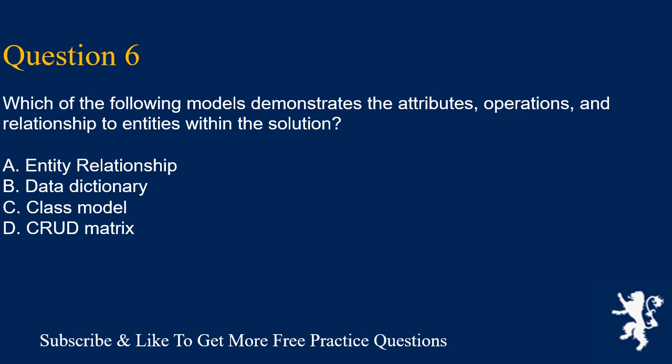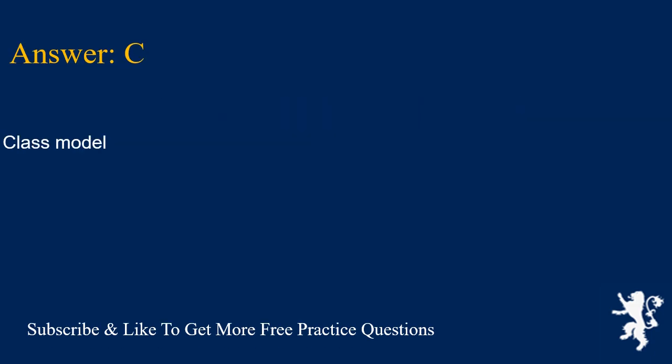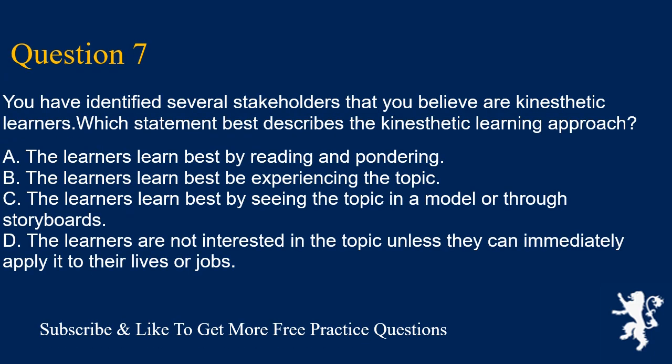Question 6: Which of the following models demonstrates the attributes, operations, and relationship to entities within the solution? A. Entity relationship. B. Data dictionary. C. Class model. D. CRUD matrix. Answer is C. Class model.